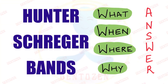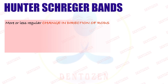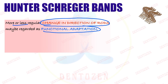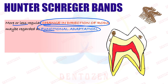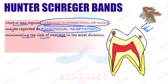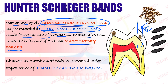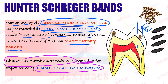You have to answer four questions: what, when, where, and why. Introduction: Hunter-Schreger bands are due to a more or less regular change in the direction of enamel rods. You already know why this change exists — as a functional adaptation to prevent cleavage, that is, breakdown, to minimize the risk of cleavage in the axial direction so they do not break down under the load of masticatory forces. Because of this change in direction of enamel rods, we see Hunter-Schreger bands — alternating dark and light bands.